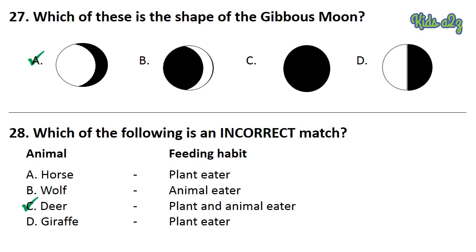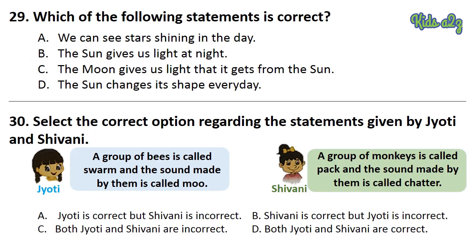That is, deer with plant and animal eater. Question 29: Which of the following statement is correct? The answer is Option C — that is, the moon gives us light that it gets from the sun. Question 30: Select the correct option regarding the statements given by Jyoti and Shivani. The answer is Option C — both Jyoti and Shivani are incorrect.